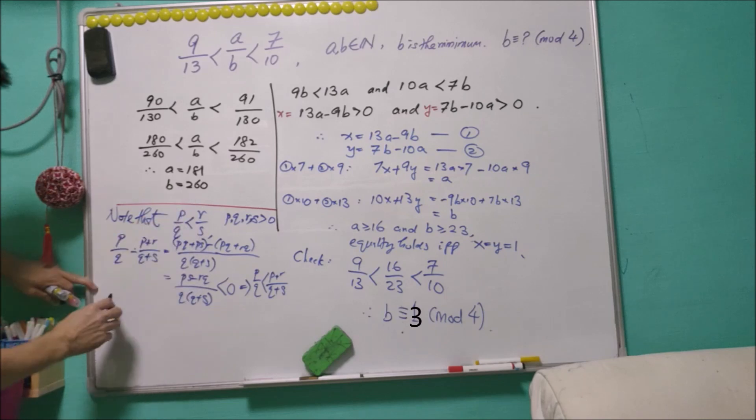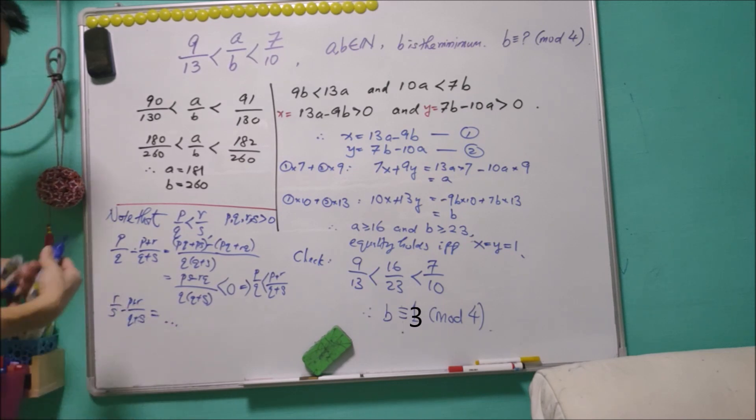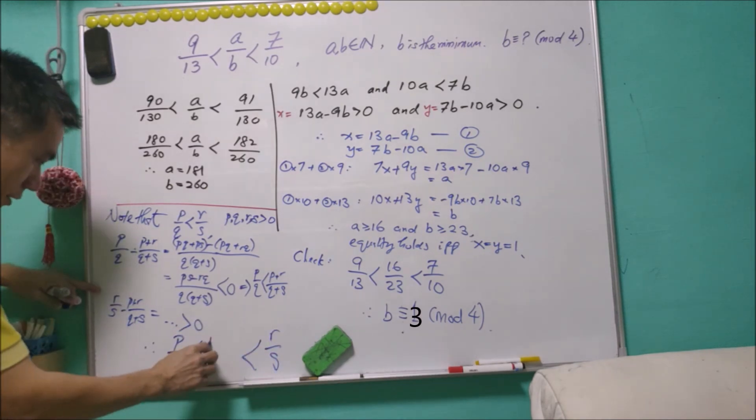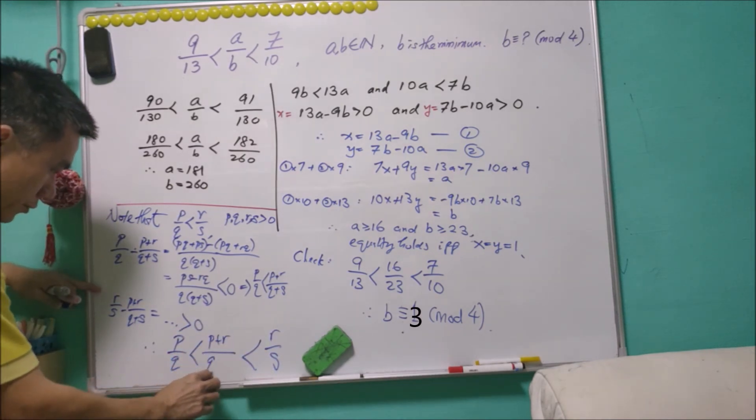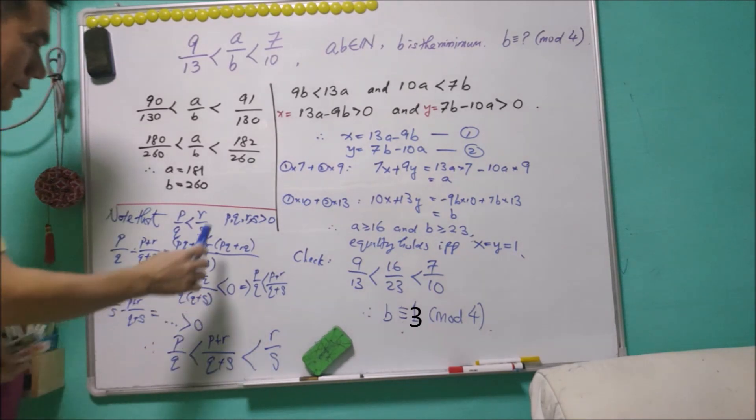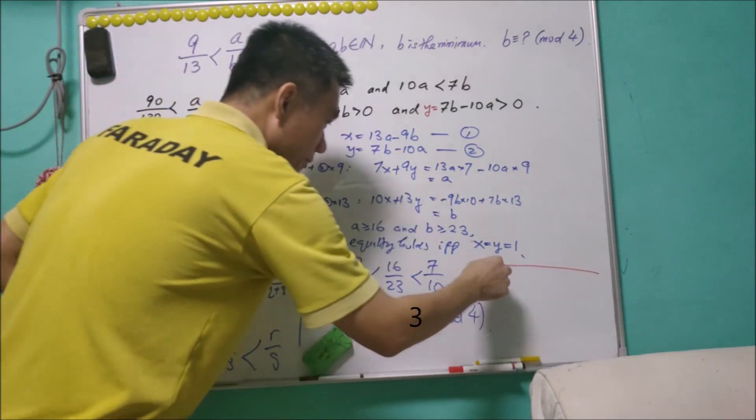And you can also consider r/s minus (p+r)/(q+s), and doing a bit of calculation this is positive. Now we know that (p+r)/(q+s) is always in between these two fractions if p, q, r, s are positive.